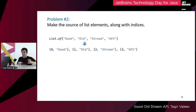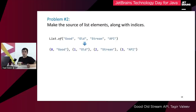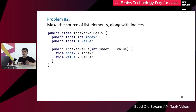There is another problem connected with this — you need to make a source consisting of list elements together with indices. This happens occasionally that you actually need indices, so you basically need a stream of pairs. There is no ready-to-use pair type in the JDK, so we have to create one. Let's call it IndexAtValue. It contains two fields: index and value. Here's a minimal implementation with public final fields. By the way, if you use Java 14 with preview features turned on, you can replace this with a one-liner and get constructor, getters, equals, hashCode, and toString for free.